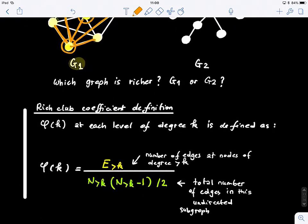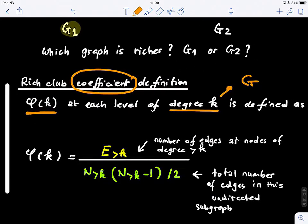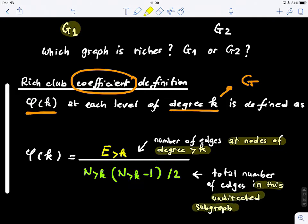Now, let's define it properly. We define a rich club coefficient associated with each graph and node. So phi of K, φ(k), at each level of degree k of a graph G, is defined as follows. So we can define the rich club coefficient of a graph at a level k or at a degree k. It's basically the proportion of the number of edges at nodes of degree strictly larger than k, divided by the total number of edges in the undirected subgraph. If you look at the subgraph network.